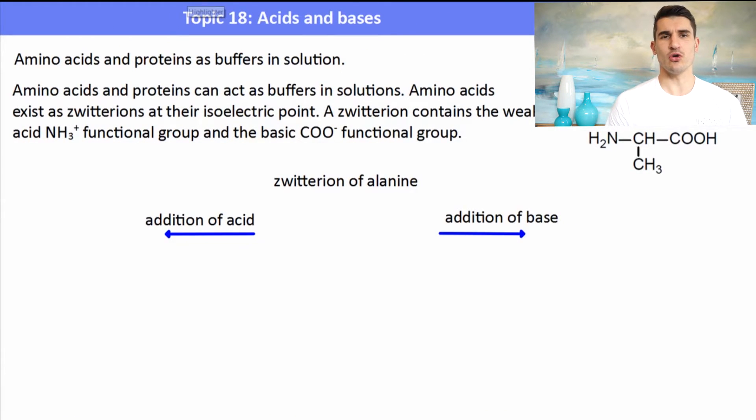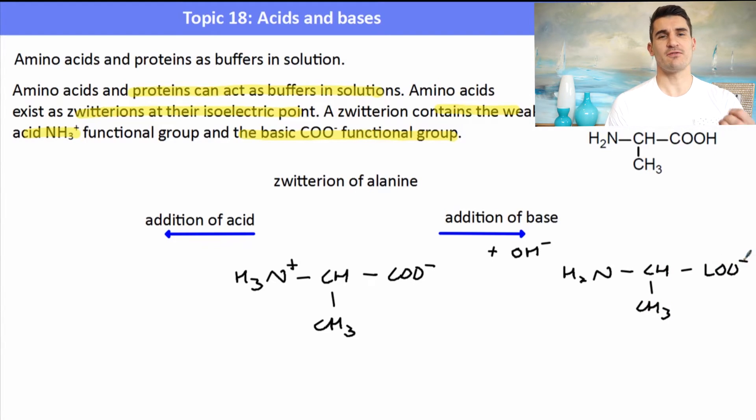So amino acids can also act as buffers in a solution. The Zwitter ions at their isoelectric point contain the NH3 functional group and the COO minus functional group. The amine section can act as a base and accept a proton and the carboxyl group can act as an acid and donate a proton. So if we added some base to an amino acid at its isoelectric point, the NH3 would donate a proton to the base and we would form a negatively charged species. If we added an acid to the solution, the COO minus section of the Zwitter ion would accept a proton and act as a base. So our amino acids can also act as buffers in solution and by extension so can proteins.